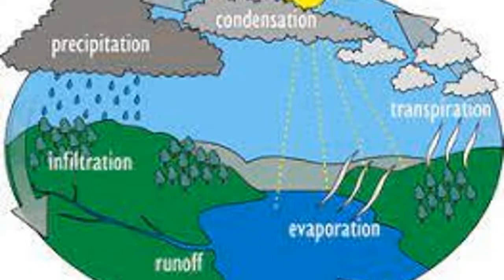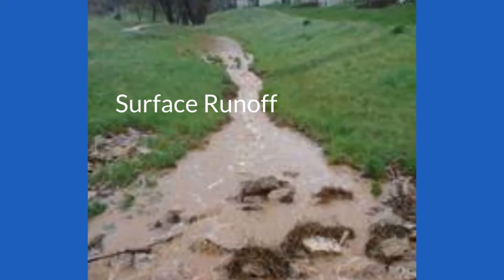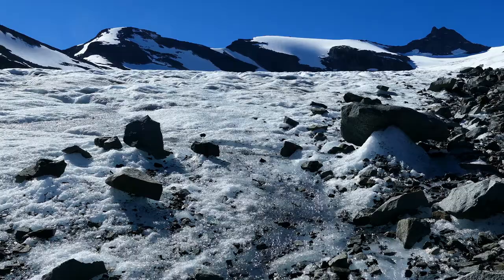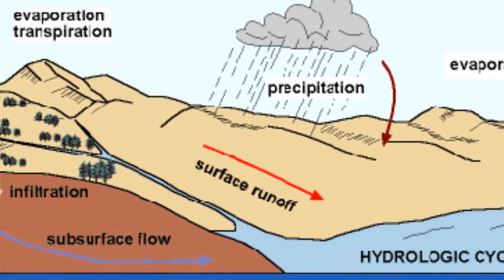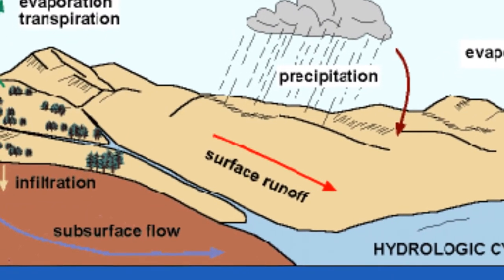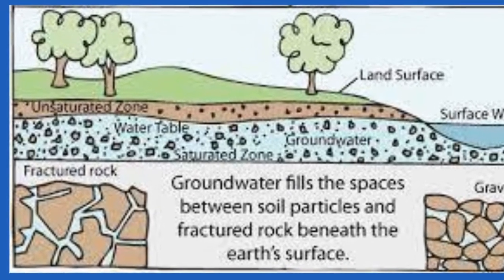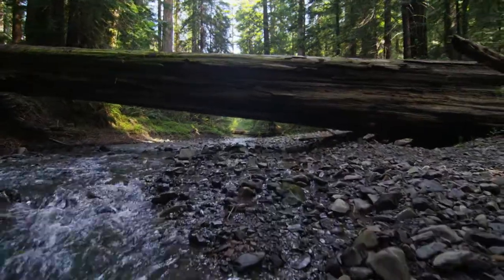Next up, infiltration — the downward movement of water through the surface of the soil. Surface runoff is the flow of water occurring on the ground surface when excess rainwater, snowmelt, or other sources can no longer sufficiently rapidly infiltrate into soil. Similarly, subsurface runoff is water that infiltrates in the unsaturated zone from rain, snowmelt, or other sources, and moves laterally towards streams.